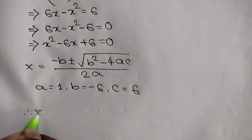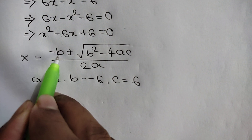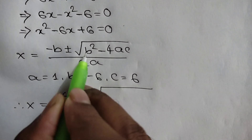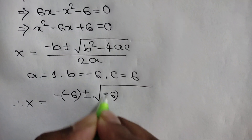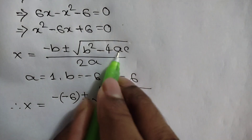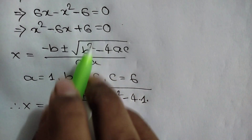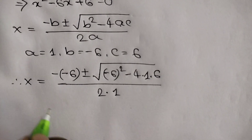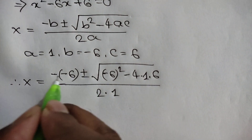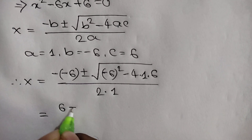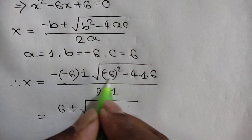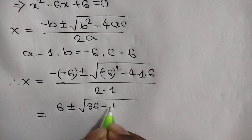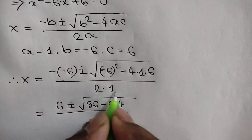So x is equal to negative b, where b is negative 6, so we write 6 plus or minus square root of negative 6 squared minus 4 times 1 times 6, over 2 times 1. That gives us 6 plus or minus square root of 36 minus 24, over 2.